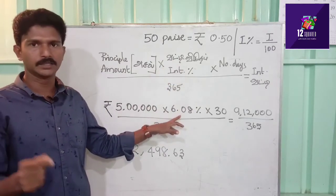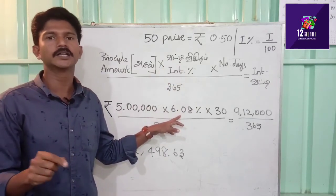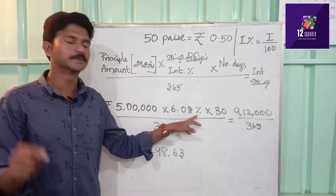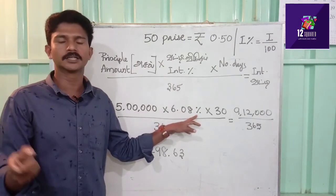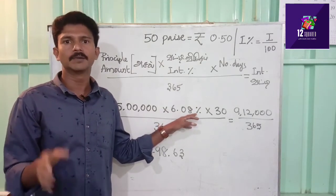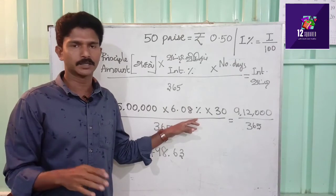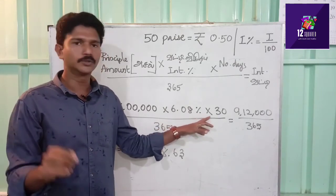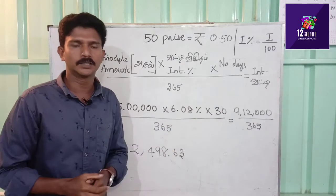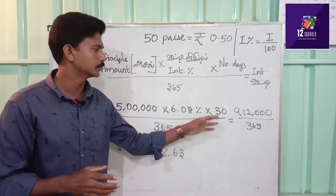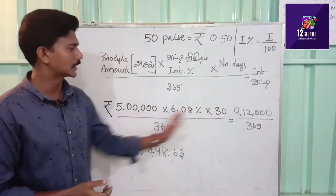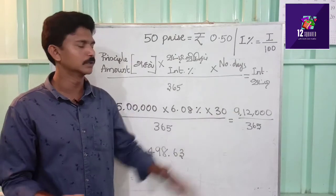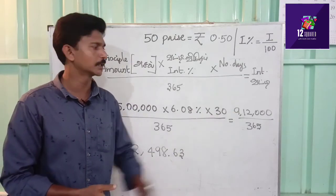We calculate the value of 0.5 times 0.00. The calculation is 5.0 into the same number. We have 6.0 into 6.08 percentage. The percentage symbol is in the mobile calculator. We use this with 500. We use 1.5 and multiply the same number.